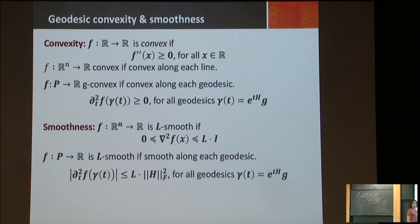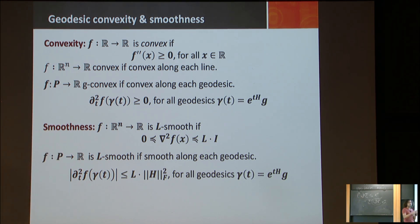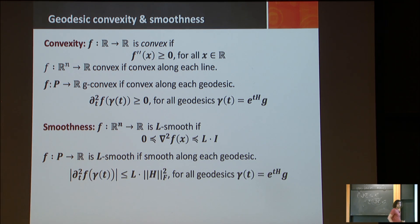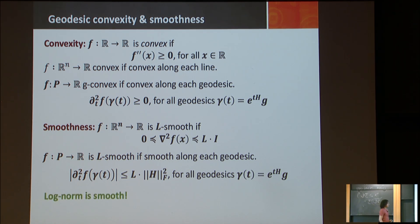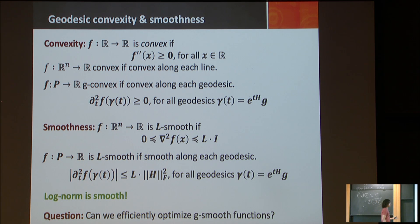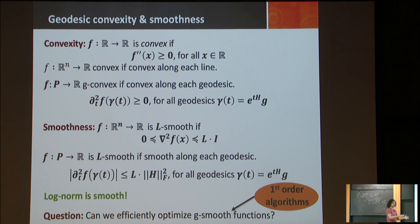We also have the smoothness parameter. A function is smooth if the second-order derivative is bounded above by L for all inputs — it's convex but bounded by a constant. A function is L-smooth if its second-order derivative is always bounded by L. Geodesically smooth with parameter L means smooth along each geodesic: the second-order derivative is between zero and L times the squared norm of your direction. Our log norm function is geodesically smooth, and we can efficiently optimize geodesically smooth functions using gradient descent.